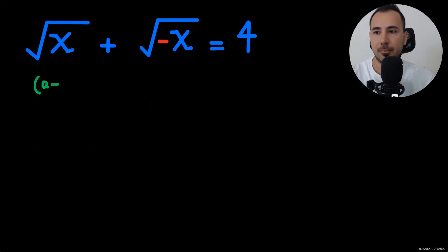So to solve it, we need to use this formula. So it would be a squared plus b squared plus 2ab.